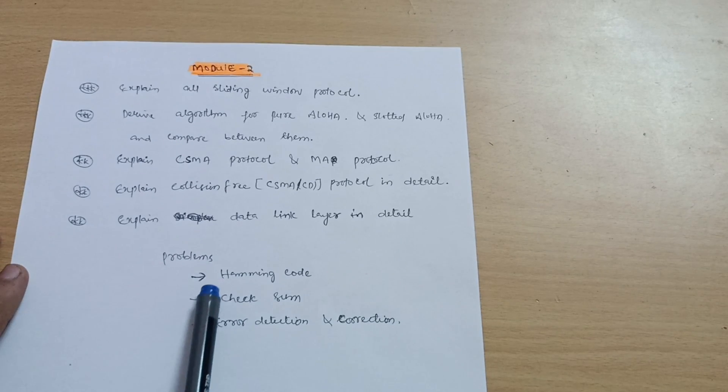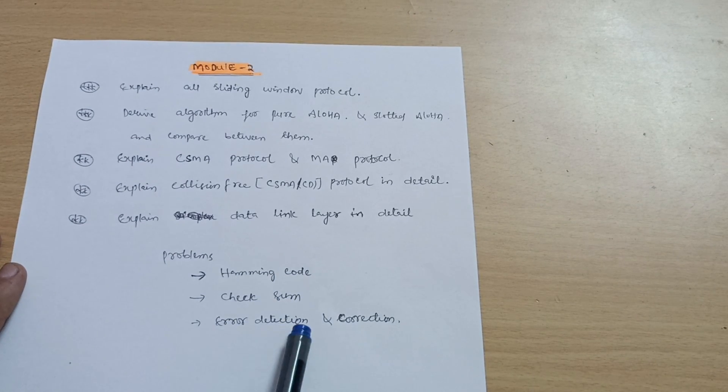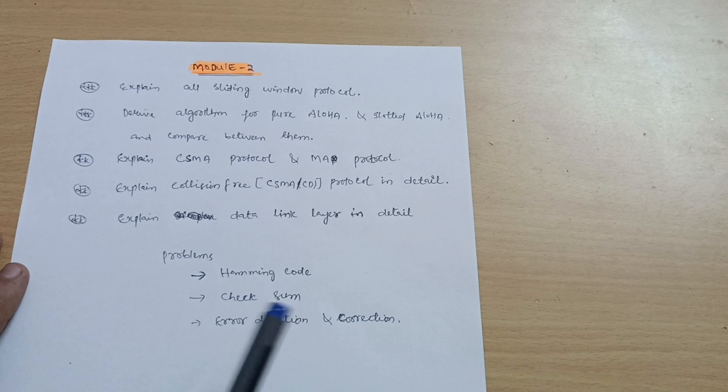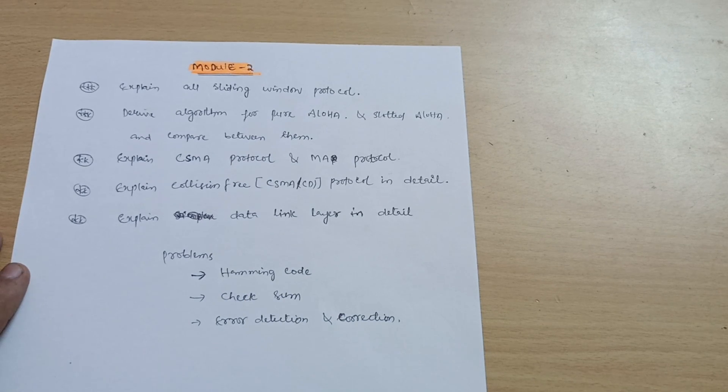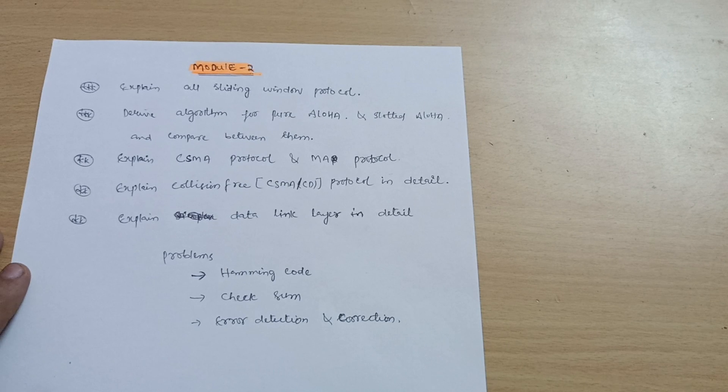Also you have to go through problems on Hamming code, checksum, and sometimes error detection and correction. You have to refer the previous year question papers of Computer Networks - 18CS53 is the subject code. You should go through those papers to get the idea what type of questions are asked. You have to practice very well.